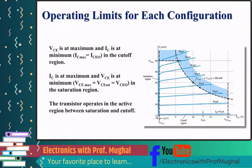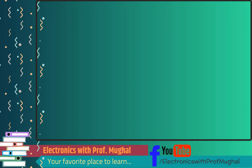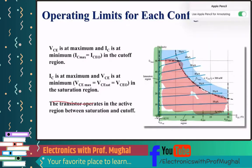In the datasheet you'll find operating limits for each configuration. There's a very tiny cutoff region, a saturation region, and everything else in the middle is your active region. You have to make sure that you stay within these dotted lines — those are the limits you cannot cross. If you do, you're going to damage your device and lose important information.